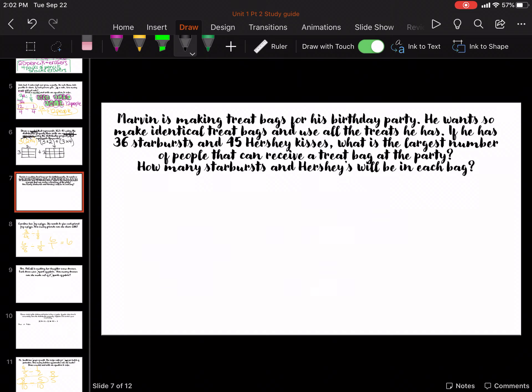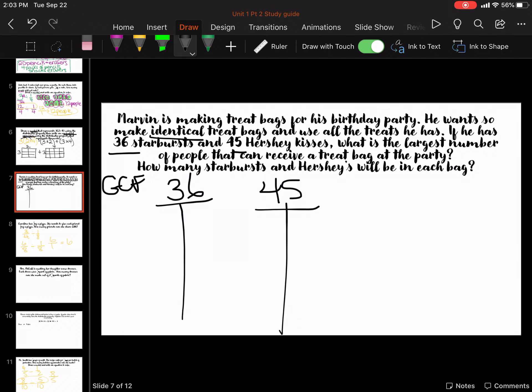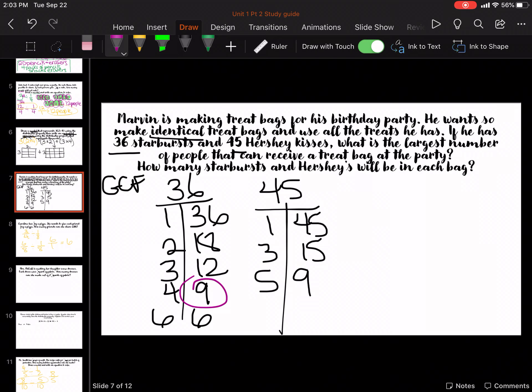Marvin is making treat bags. He wants to make identical treat bags. 36 starbursts, 45 Hershey's. What is the largest number of people that can receive the bags? How many starbursts, how many Hershey's? So it is going to be GCF. Identical, putting them into groups. 36 and 45. 1 and 36, 2 and 18, 3 and 12, 4 and 9, 6 and 6. 1 and 45, 3 and 15, 5 and 9. GCF is 9, so it is 9 people, or 9 bags. 9 people can get a bag.